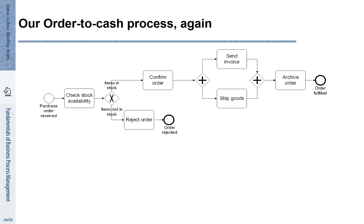Let's look again at our order-to-cash process. We see here the different events, gateways, and activities of that process. Clearly there are information objects related to that process.